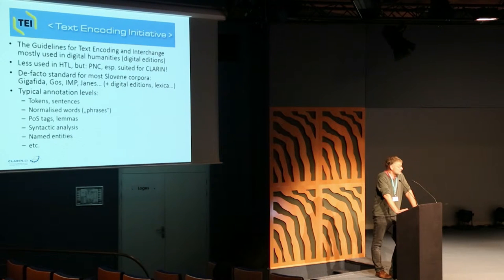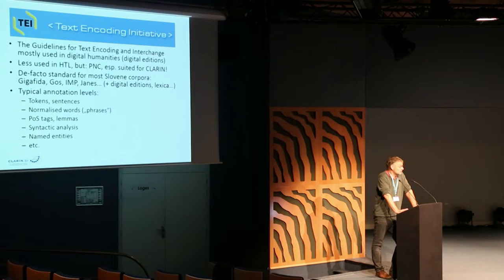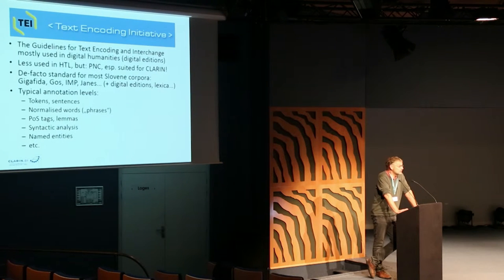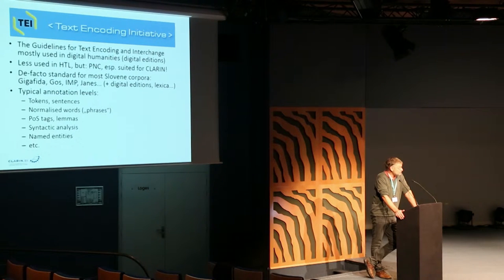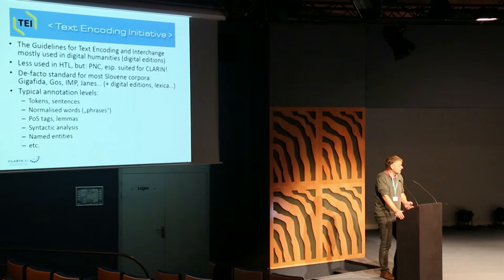The typical annotation levels from a human language technology perspective that we encode in TEI are, of course, tokens and sentences. An interesting level of annotation is normalized words — something we use in historical corpora or in CMC corpora where you want to first normalize a word in order to tag it and lemmatize it, but also to search for it. Then there are part-of-speech tags, lemmas, and so on — the standard stack of annotations.